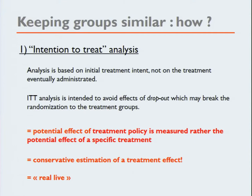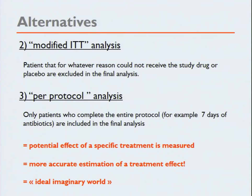To keep groups similar afterwards, you use an intention-to-treat analysis. The analysis is based on the initial treatment intent, not on the treatment eventually administered. This avoids the effects of dropouts, which may break the randomization. The potential effect of the treatment policy is measured rather than the potential effect of a specific treatment — it is a conservative estimation of treatment effects and reflects real life. A modified intention-to-treat analysis excludes patients who, for whatever reason, just could not receive the drug or placebo. A per-protocol analysis includes only patients who completed the entire protocol — for example, seven days of antibiotics — giving a more accurate but idealized estimation of treatment effects.